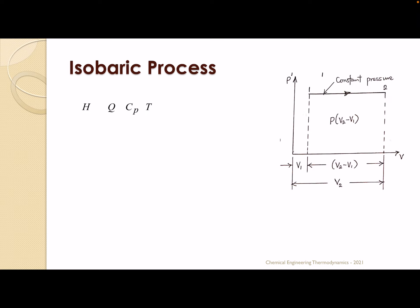Let's move on to the second condition, the isobaric process. We've seen that change in H equals Q equals CP times change in T. Let's look at the diagram: for isobaric, pressure is constant. If you pick a value of pressure, you can see the volume is changing. We have V1 and V2, but the pressure remains the same. This is a PV diagram describing the isobaric process.